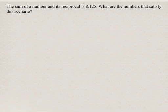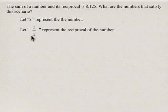In this word problem we're told that the sum of a number and its reciprocal is 8.125, and we want to know what numbers satisfy this scenario. We're going to let x represent the number, and we can write this as x over 1. Then the reciprocal of x is 1 over x.